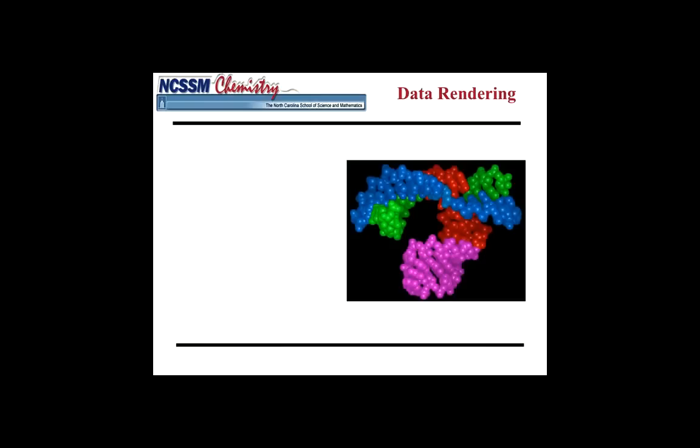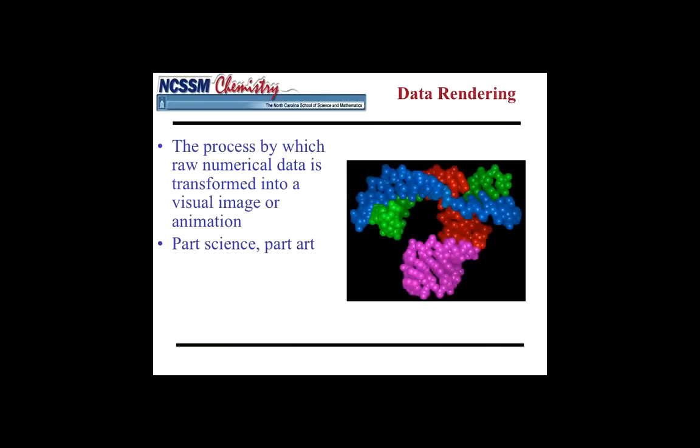Data rendering, you'll see the rendering there on the right. That's a picture of a protein. But this is the process by which raw numerical data is transformed into a visual image or animation. It's part science and part art. The people who are really good at scientific visualization are people who have a good sense of color. They have some nuance in terms of how they use color. You'll see that in some of the labs you're asked to do where you'll be asked to brighten the image up or contrast it or change the colors. And if you are particularly good at being able to nuance colors a little bit, have a little bit of an artistic eye, that will make you a good scientific visualization scientist.